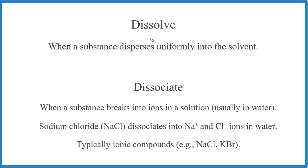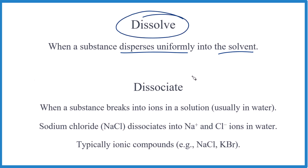Let's start with what's similar. Whenever we have a substance — say NaCl, table salt, or sugar — and it disperses uniformly in a solvent, we put it in water, we say it dissolves. It spreads out evenly into a homogeneous mixture. That's called dissolving. Salt and sugar will dissolve in water, a solvent.